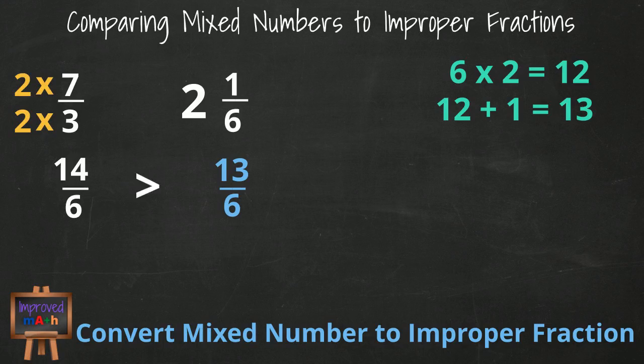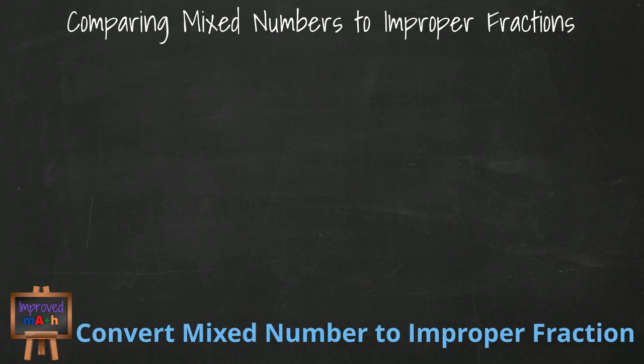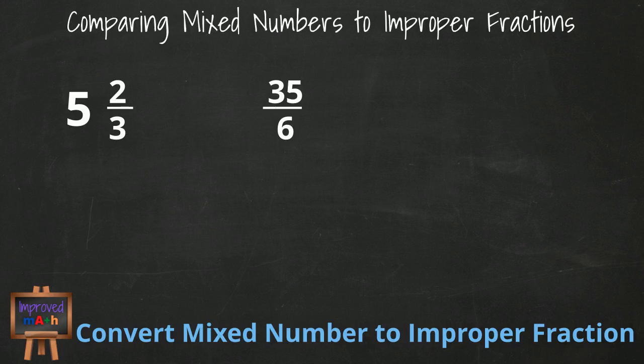We will look at one more example, and this time we'll convert the mixed number to an improper fraction, and we will use cross multiplication to figure out which fraction is bigger. Which one is larger, 5 2/3 or 35/6? We change 5 and 2/3 to an improper fraction by putting down 3 as our denominator first.